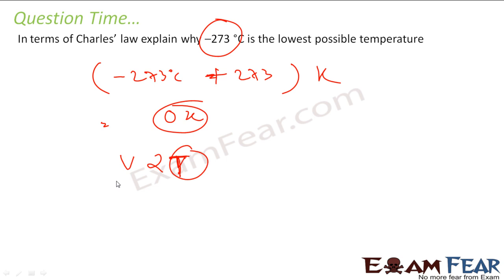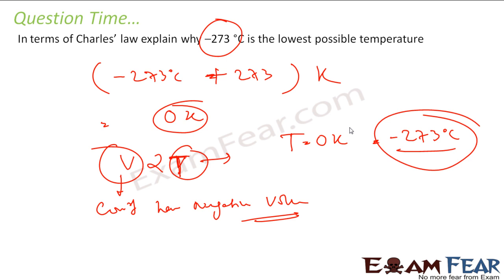Volume is actually proportional to temperature. So if my temperature is zero, volume is zero. I cannot have a negative value. I cannot have negative temperature in the Charles equation. So in Charles equation, temperature is in Kelvin. So the minimum value of T I can have is zero Kelvin. And zero Kelvin is nothing but minus 273 degrees Celsius. This is the minimum possible temperature as per Charles law.